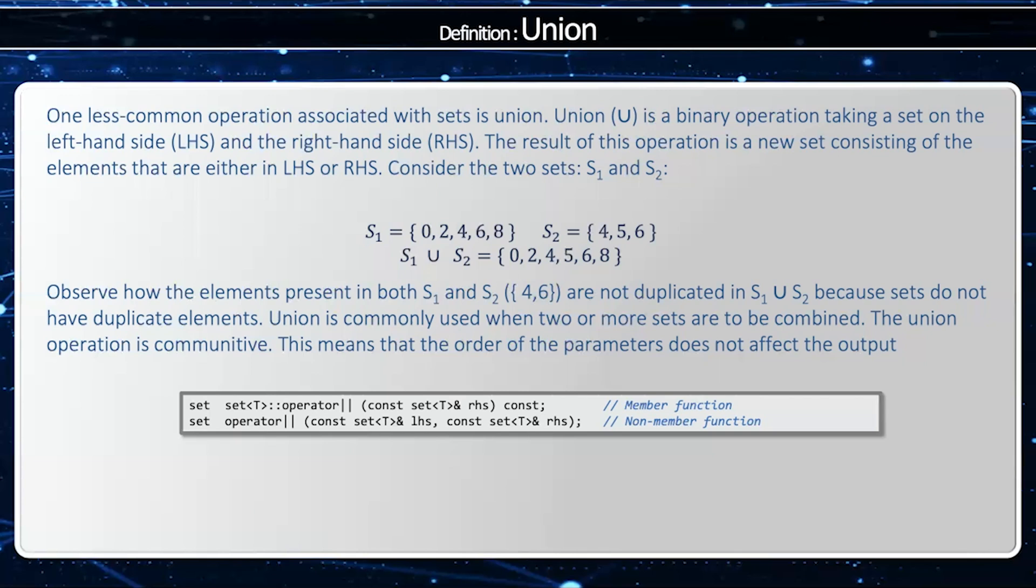Now, the common way to represent the union is with the or symbol. And so the prototype would be set, which is what I'm going to return, set of T, colon, colon, operator or, and then we take the left-hand side as a parameter. I could also do the non-member version where I have set or, and then a left-hand side, and then the right-hand side.